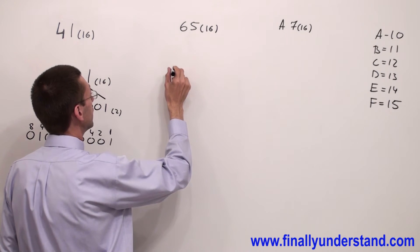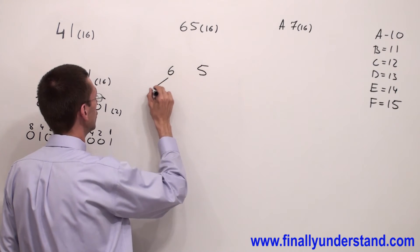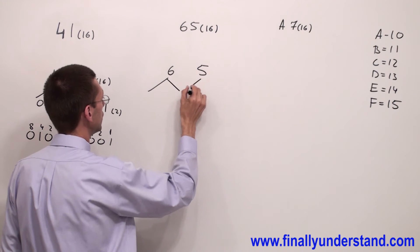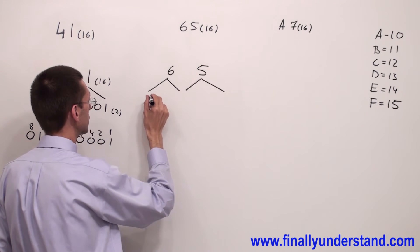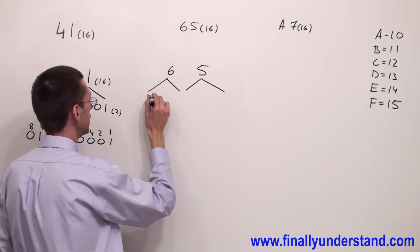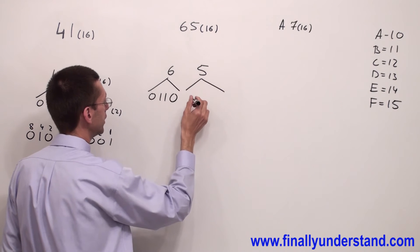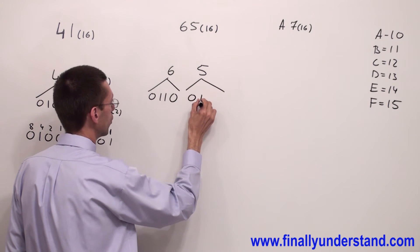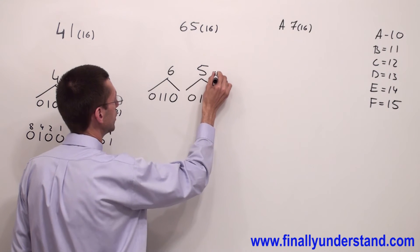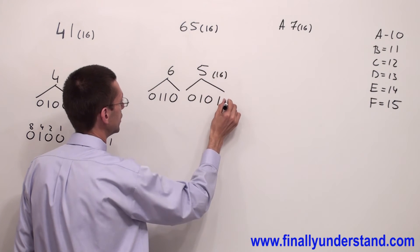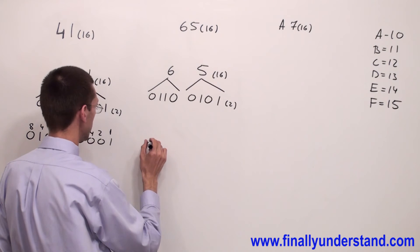Let's take a look at the next example: 65₁₆. Again, I'm supposed to convert every single hexadecimal digit to 4 bits. Six in binary is 0110, and five in binary is 0101. This is base 16, and this is base 2 — this is my answer.